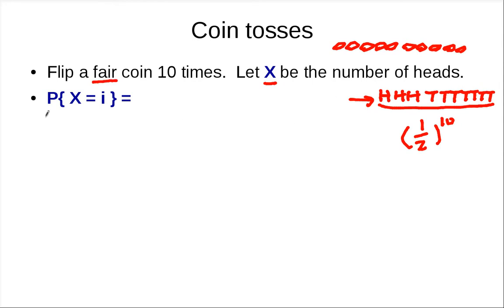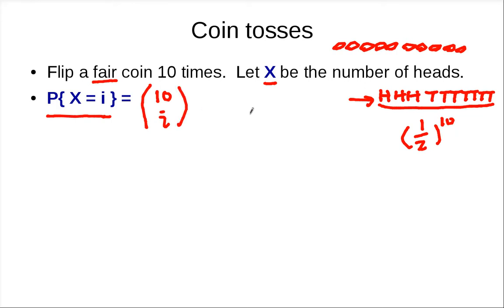To compute the probability that you get exactly i heads, you need to look at all possible outcomes that contain i heads. There are 10 coins and i of them have to turn up heads. Each outcome happens with the same probability, so it's going to be 1/2 to the 10th.